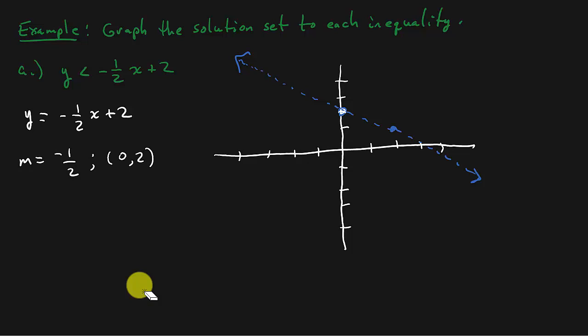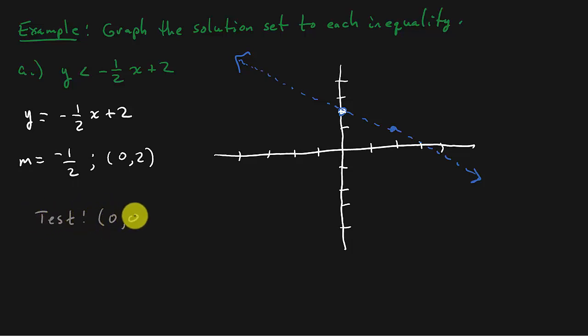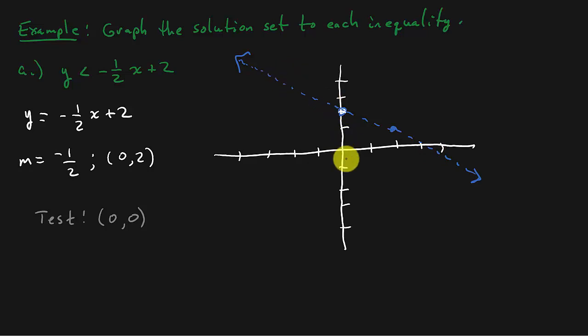After we graph the line, we have to shade one side of the graph. The way we do that is we pick a test point. I'm going to choose (0, 0). You can choose any point you want as long as that point is not on the line. My suggestion: if the line is not going through (0, 0), pick (0, 0) every time, as long as it's in the domain of the function.